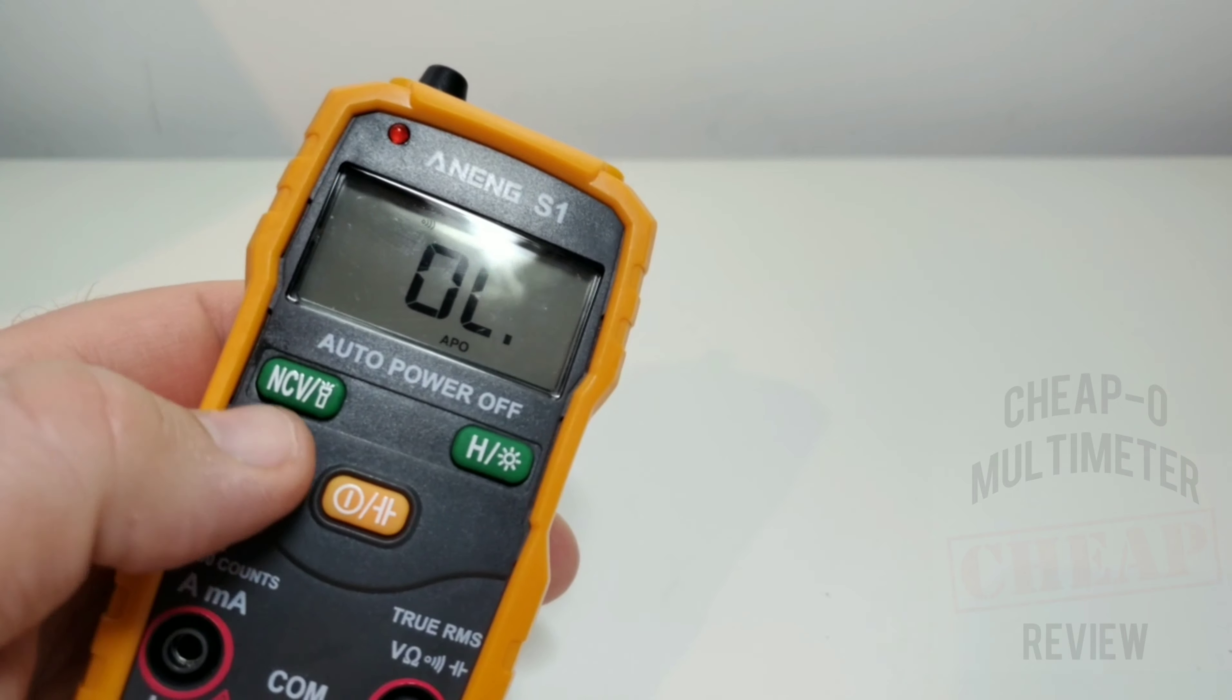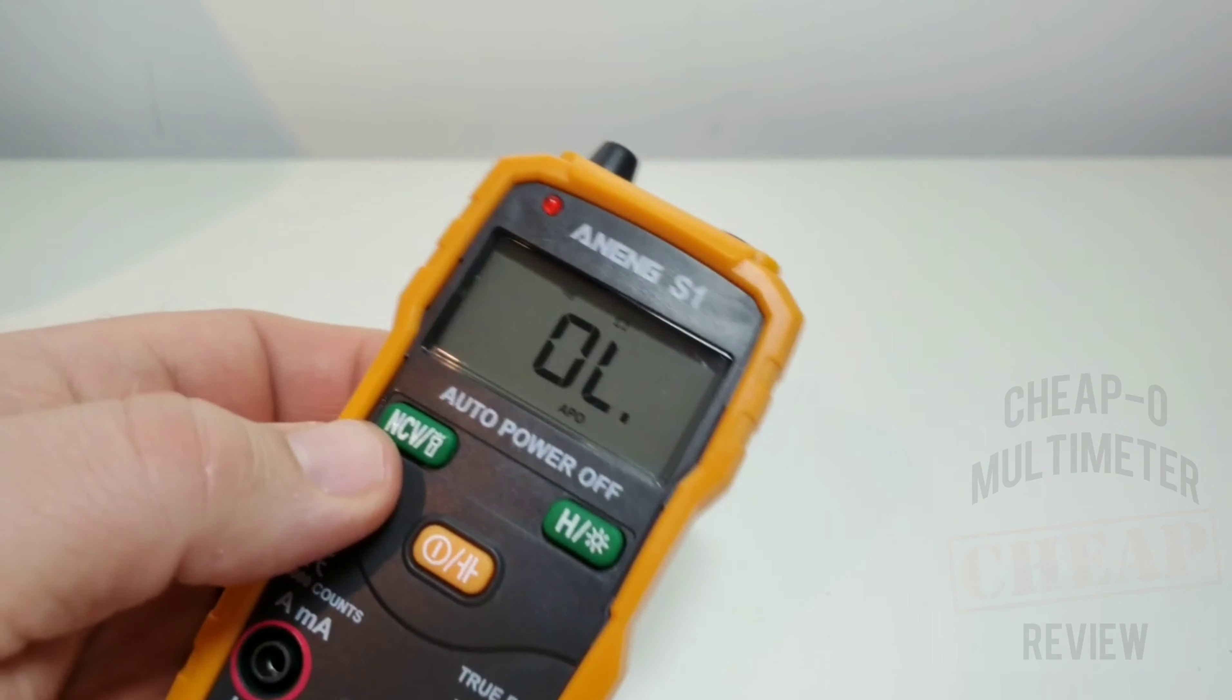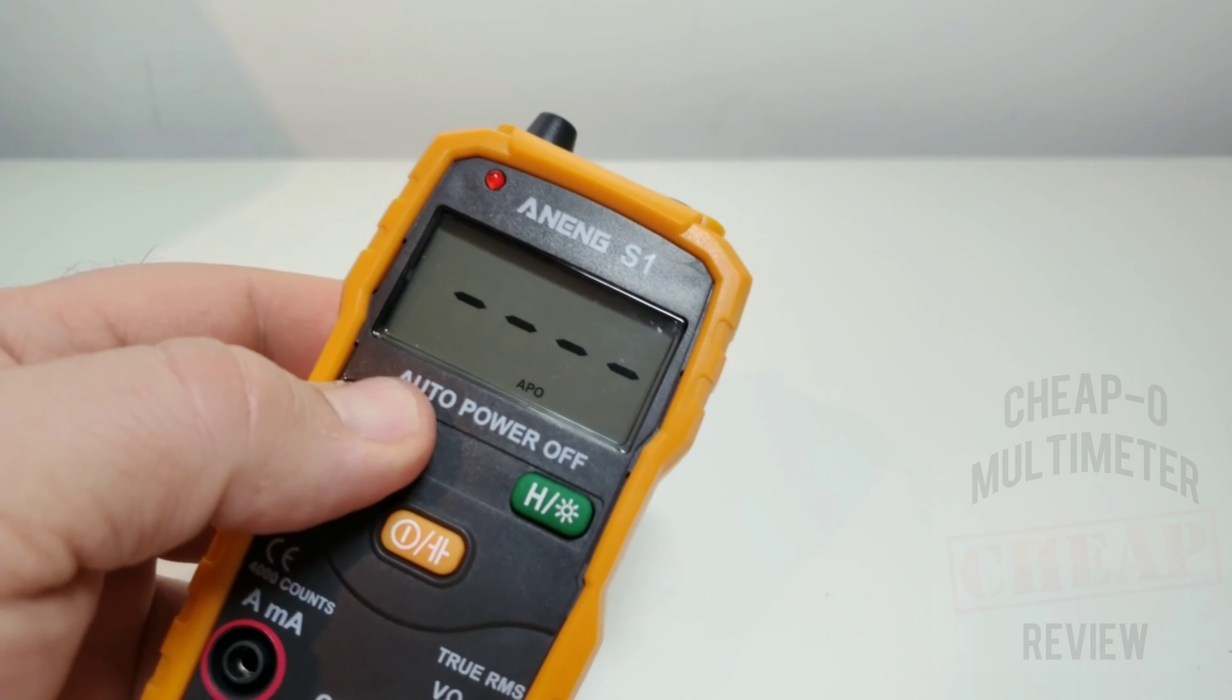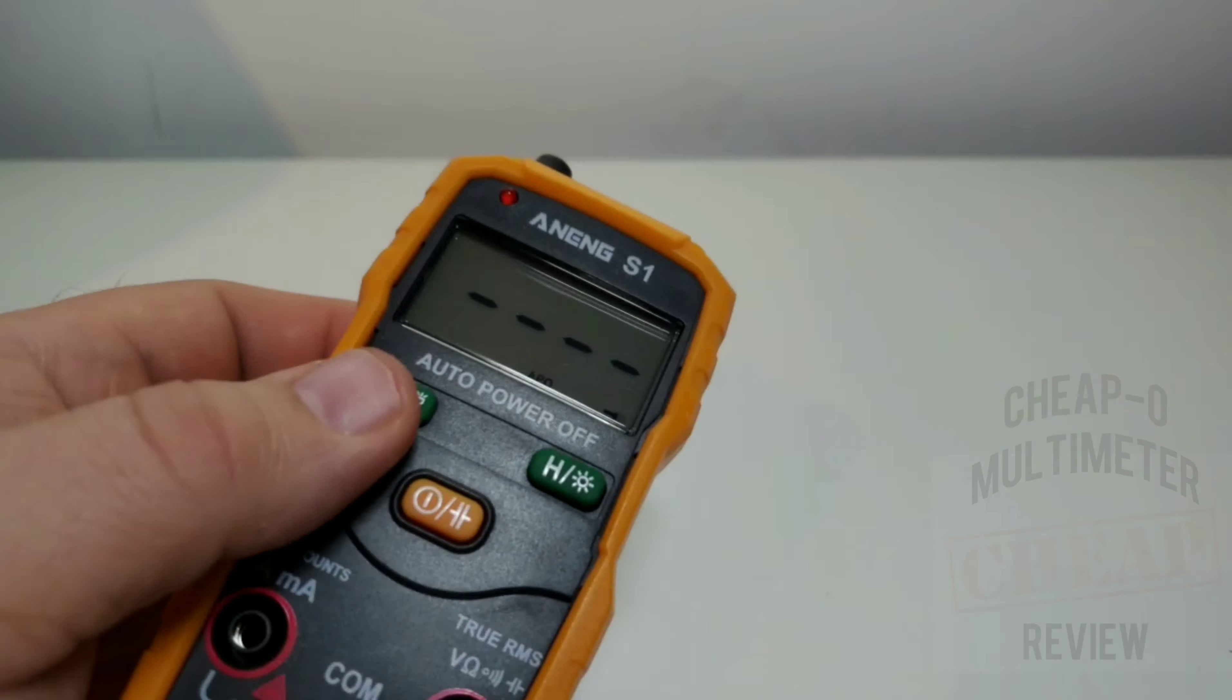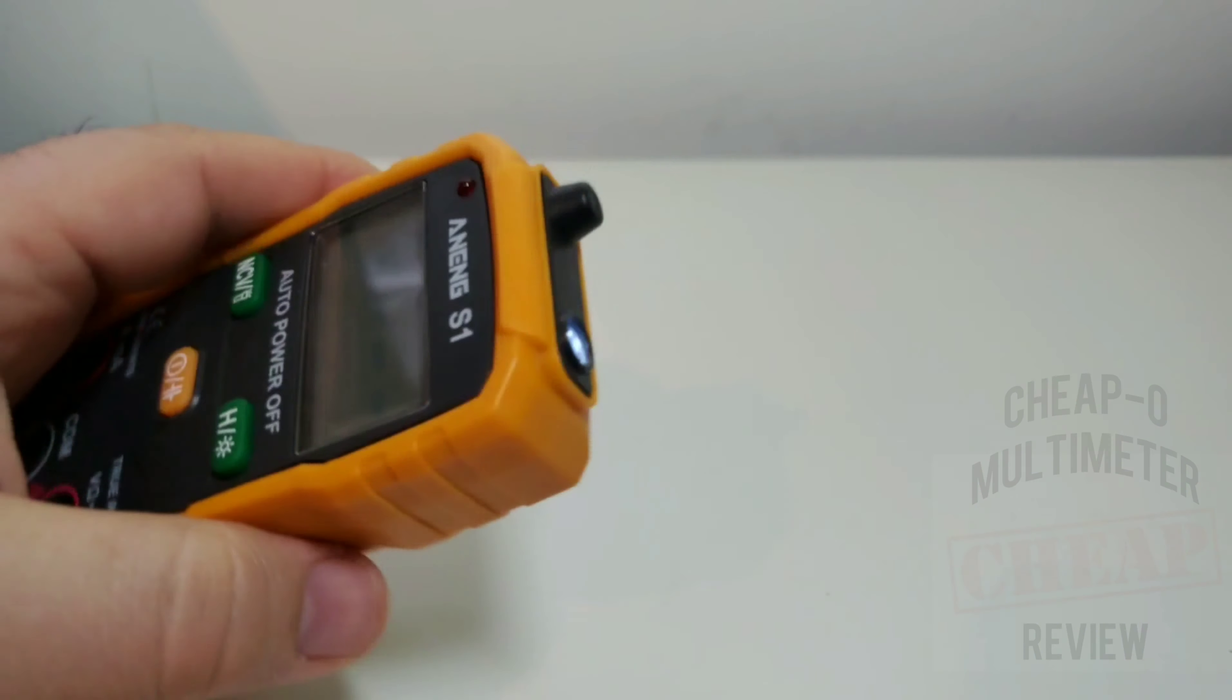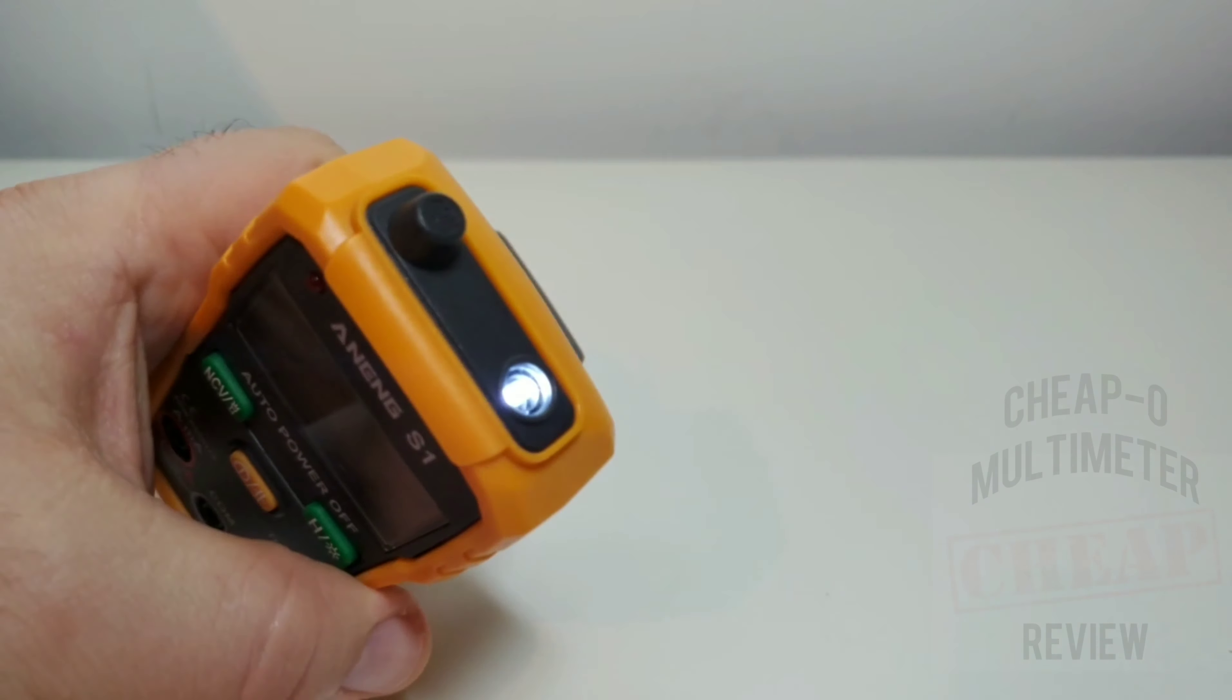82.5 dBA is the default loudness in continuity mode. That also has the standard NCV flashlight features that we've come to know and love and expect in every cheapo multimeter that comes out. So let's see if we can enable this flashlight. Ah okay, it's just one quick button push and it enables the flashlight. And it's a flashlight, not super bright, but yeah, the heck.